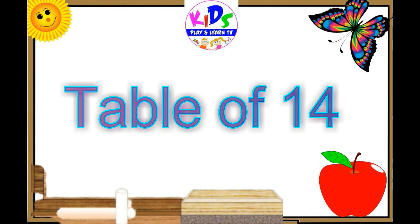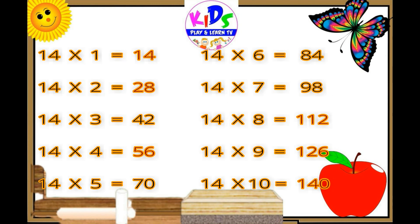Hey kids, let's repeat. 14 ones are 14. 14 twos are 28. 14 threes are 42. 14 fours are 56. 14 fives are 70. 14 sixes are 84. 14 sevens are 98. 14 eights are 112. 14 nines are 126. 14 tens are 140.